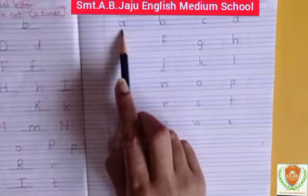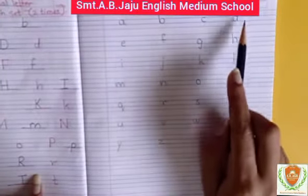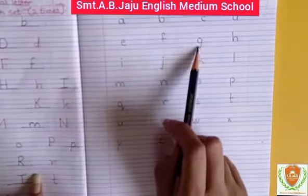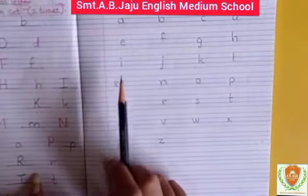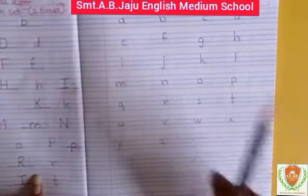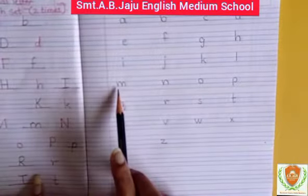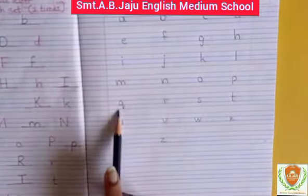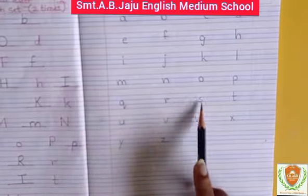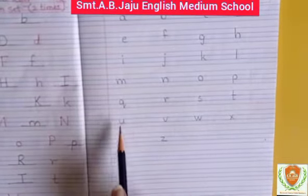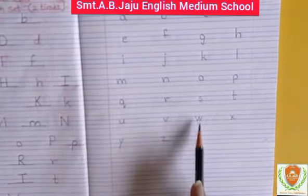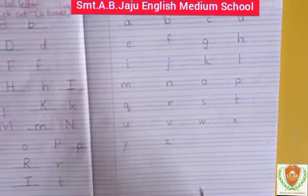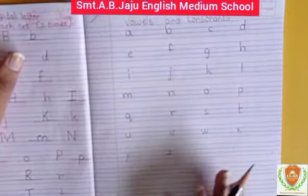Let's read. We will write: a, b, c, d, e, f, g, h, i, j, k, l, m, n, o, p, q, r, s, t, u, v, w, x, y, z. So, what are the alphabets? A to Z.